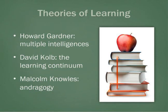Howard Gardner's theory is labeled multiple intelligence. David Kolb's theory is based on the premise that learning is on a continuum and experience plays a huge part. And Malcolm Knowles is noted for andragogy, looking at the self-directed adult learner.